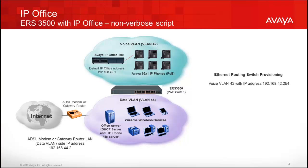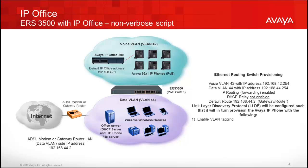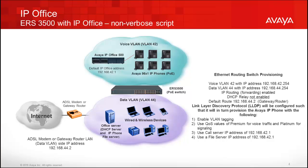The IP Office non-verbose script will be used to provision the following: add voice VLAN 42, add data VLAN 44, add IP addresses to both the voice and data VLANs, enable IP routing, disable DHCP relay, and add a default route pointing to the gateway router using an IP address of 192.168.44.2. Finally, it enables LLDP on the switch, which will provision the IP phones with VLAN tagging for the voice VLAN using a QoS value of premium for voice traffic and platinum for signaling traffic, and uses the default IP Office IP address of 192.168.42.1 for both the call server and file server.